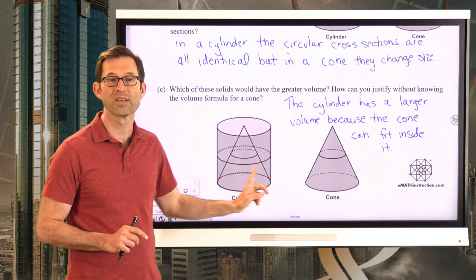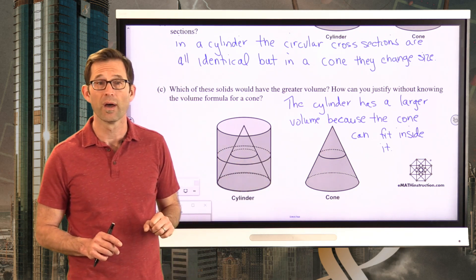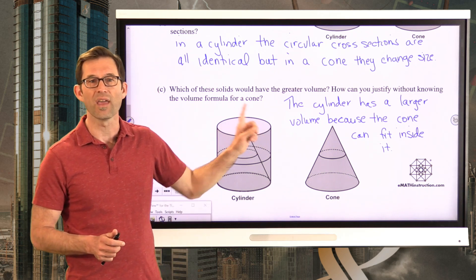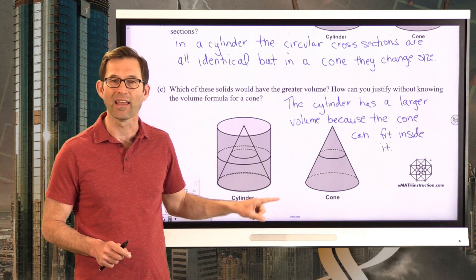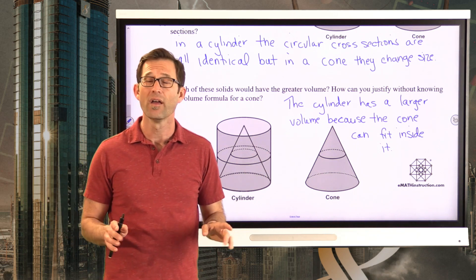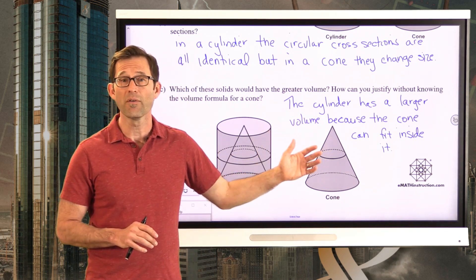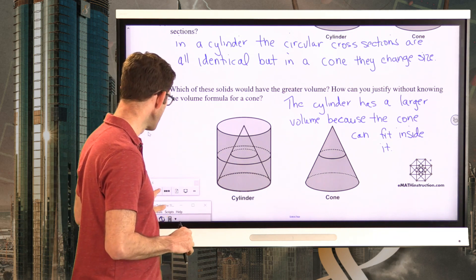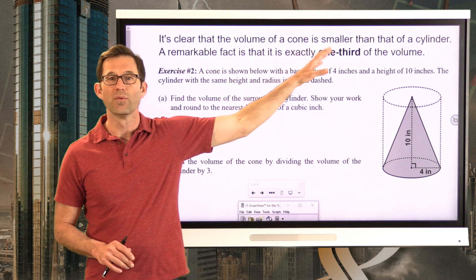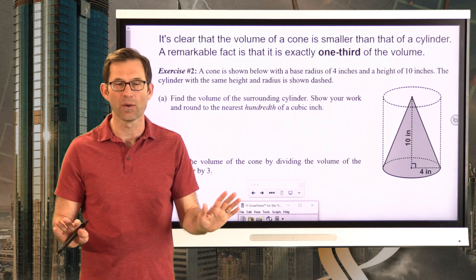You can also see the constant cross-section for the cylinder and then the smaller one for the cone. The volume of that cone is smaller than the volume of the cylinder. The volume of a cylinder is found by taking the area of the base — pi r squared — and multiplying it by the height. The cone formula for volume is going to be very similar, but it can't be the same. The remarkable fact is that it is exactly one-third the volume of the cylinder. Exactly one-third.